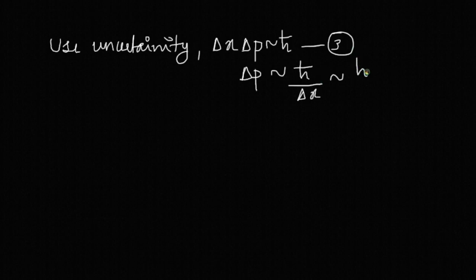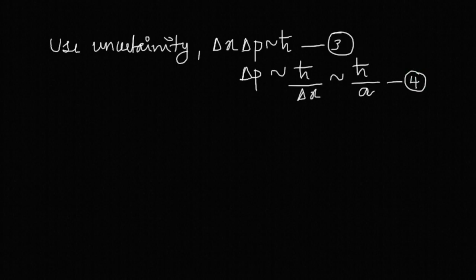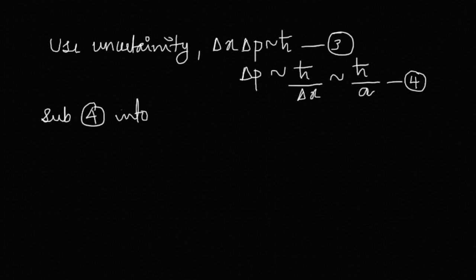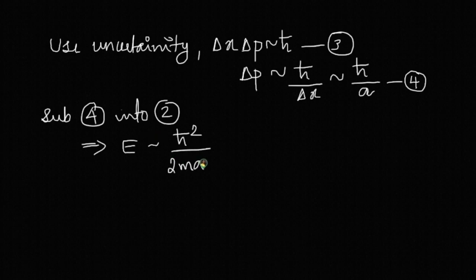Now substitute this back into equation 2. We get E ≈ ℏ²/2ma² + ½mω²a², where instead of δp we have substituted ℏ/a and δx is taken as the amplitude a.